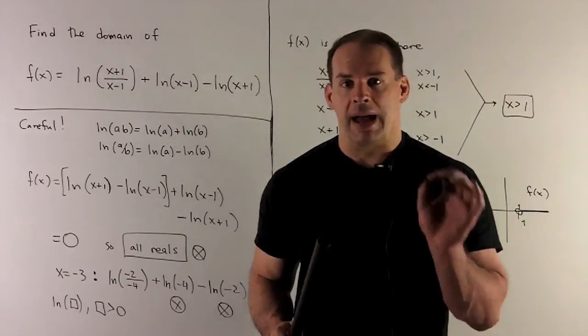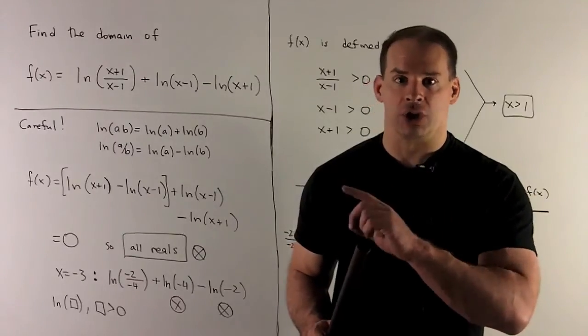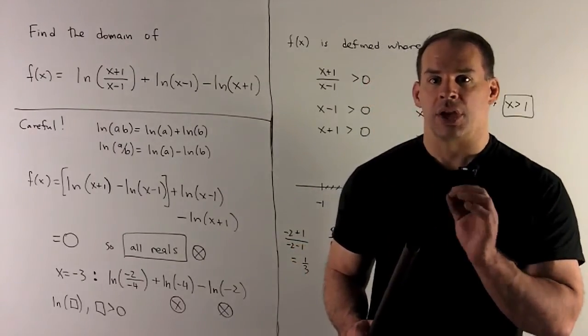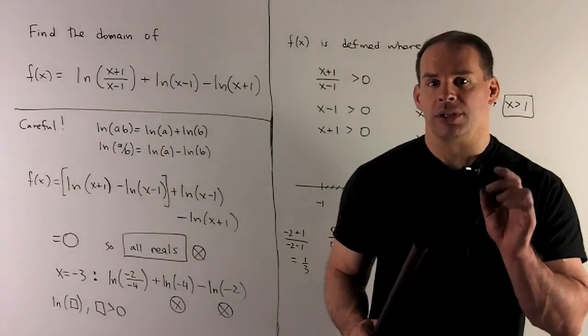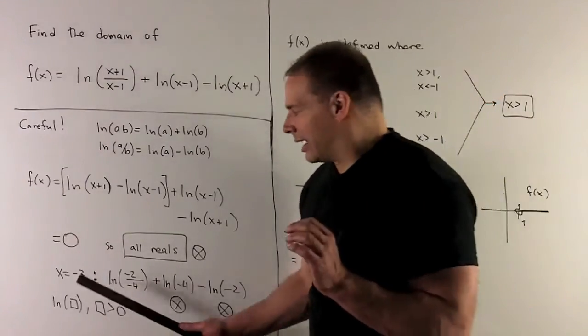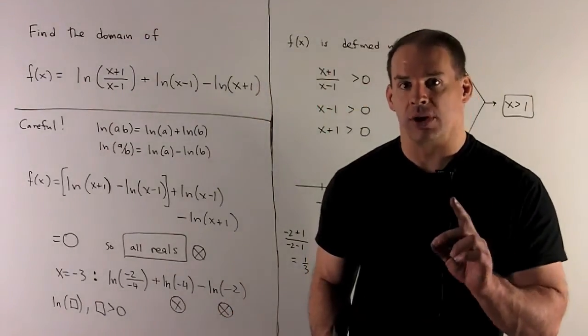When we combined, we made a lot of numbers that weren't good are now good for our function. So how do we do things to make it right? We're going to use the idea that natural log of a box is going to be defined where box is greater than 0.